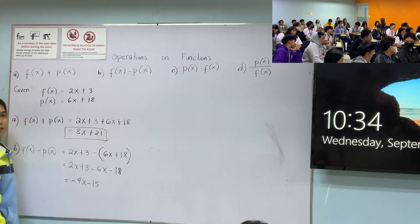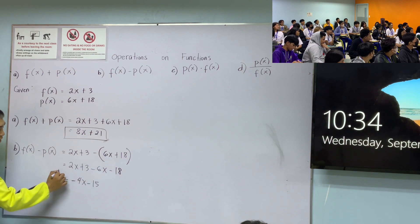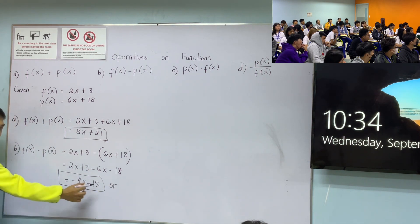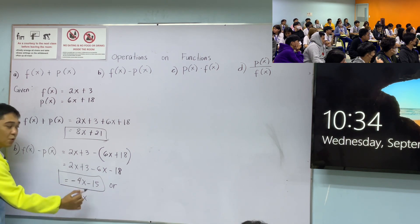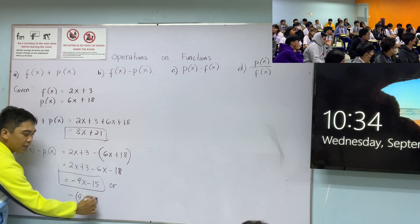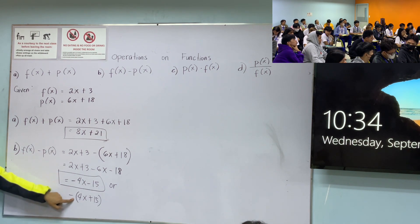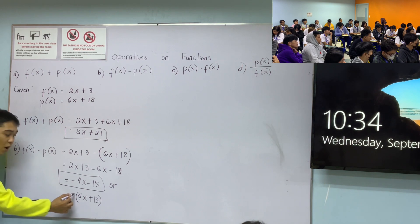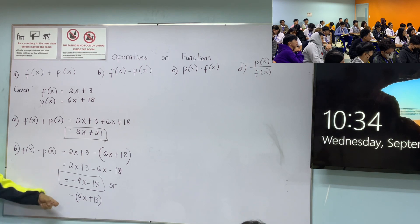Is −4x − 15 the final answer? Yes. But you can also factor out the negative to get −(4x + 15) — both are the same. We factored out −1 as the common factor, so we just show the negative sign. Clear?